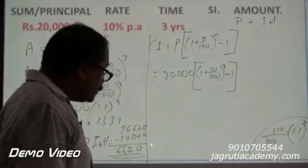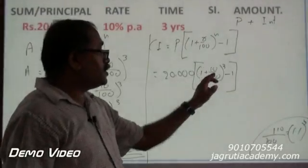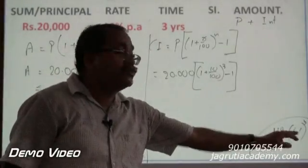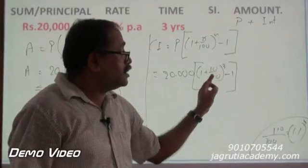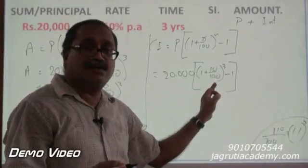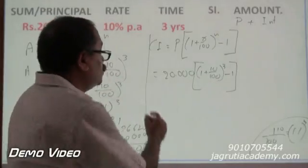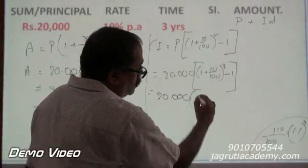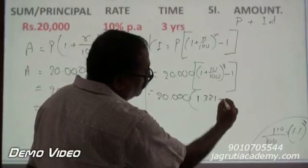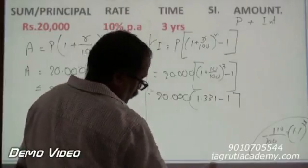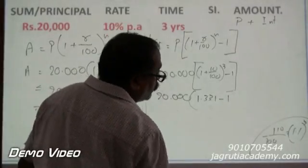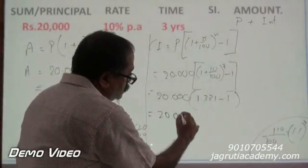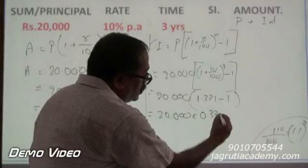Now, by solving this part, what do you get? 110 by 100. 110 by 100 is nothing but 1.1 to the whole power 3 which is again 110 by 100. So, let's write down this as 20,000 into cube of this 1.331 minus 1. This is closed. So, finally, I get this as 20,000 into 0.331.